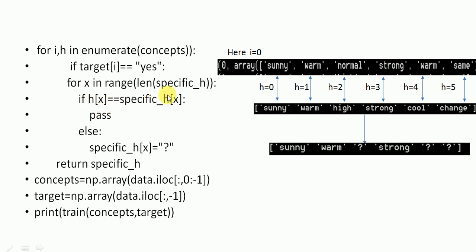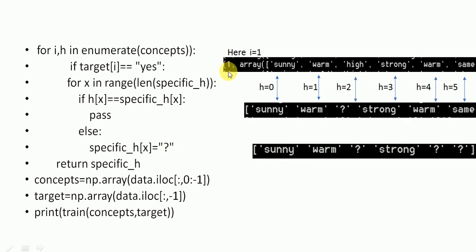For the next value in the target — where i equals one — we have already reached the generalized value and there is no need to change further. Sunny remains sunny, warm remains warm; the question mark remains question mark, strong remains strong, warm remains warm, and same remains same. So there is no change and it stays the same.